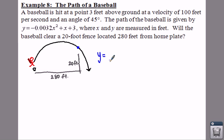So if you put in negative 0.0032, and for x you're gonna plug in 280, that is your horizontal distance, squared, plus 280 plus 3. Then what does that give you?